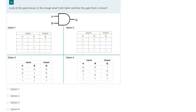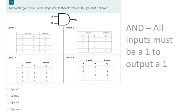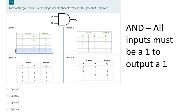The next question: look at the gate below in the image — what truth table matches the gate shown? This is an AND gate. We need to remember the rule: all inputs must be a one to output a one. So I'm looking for when all inputs are one. We've got inputs A and B.